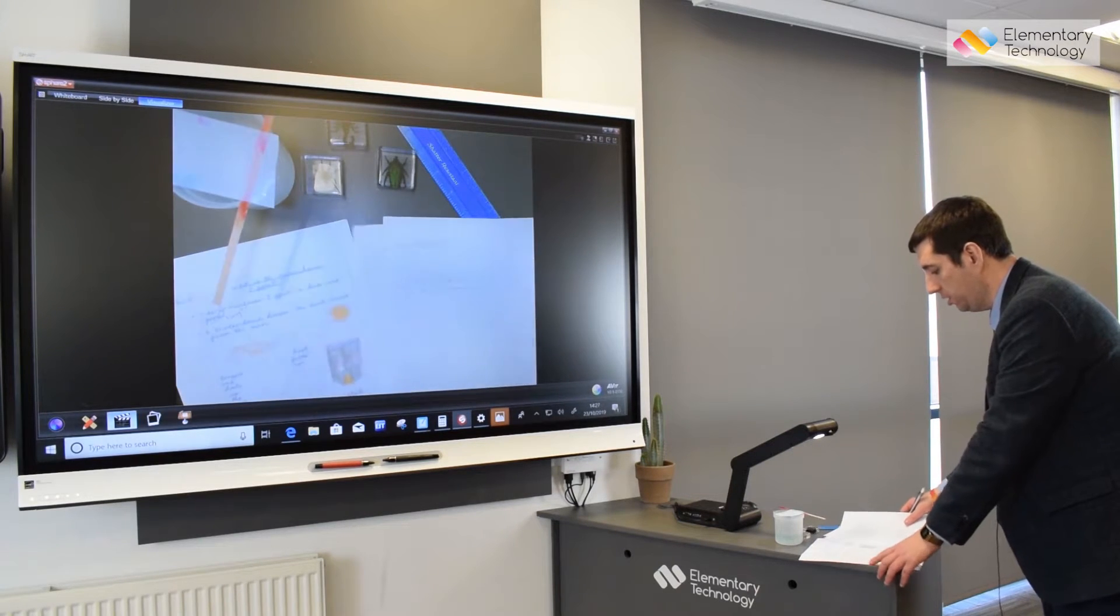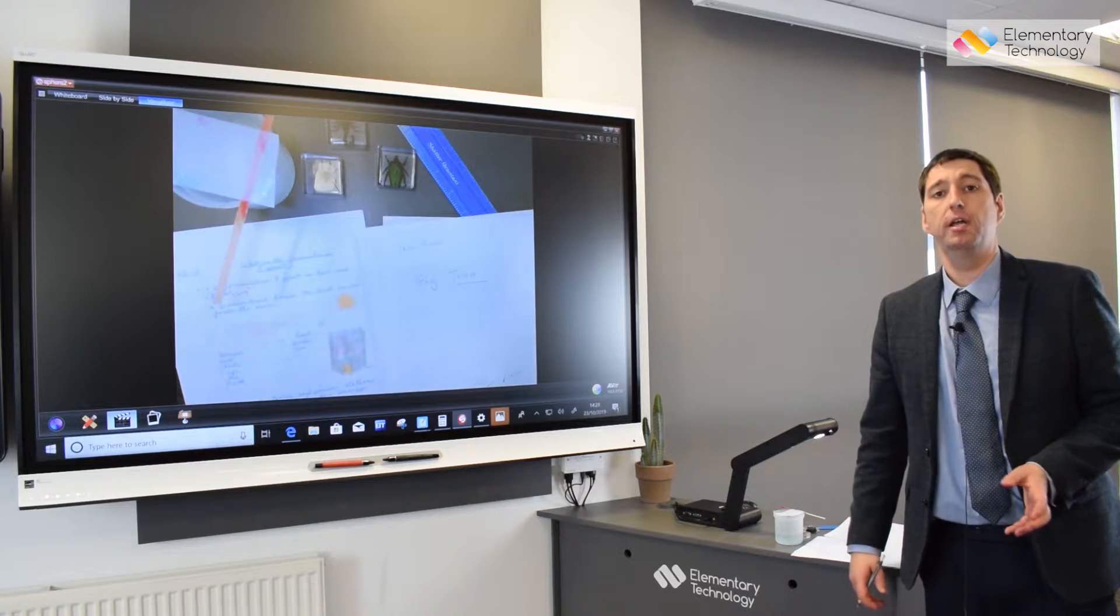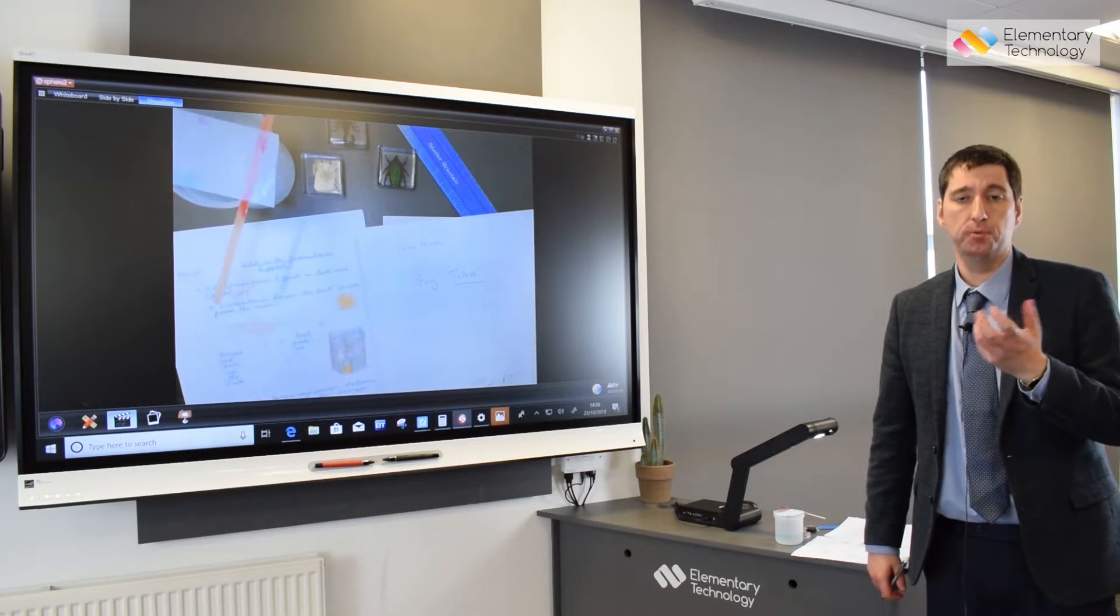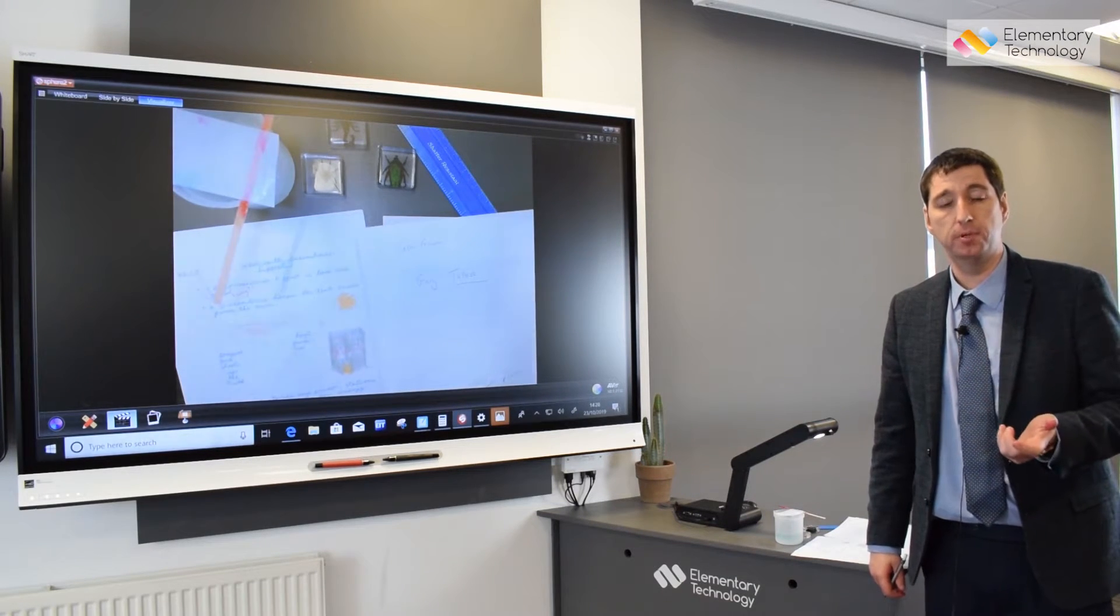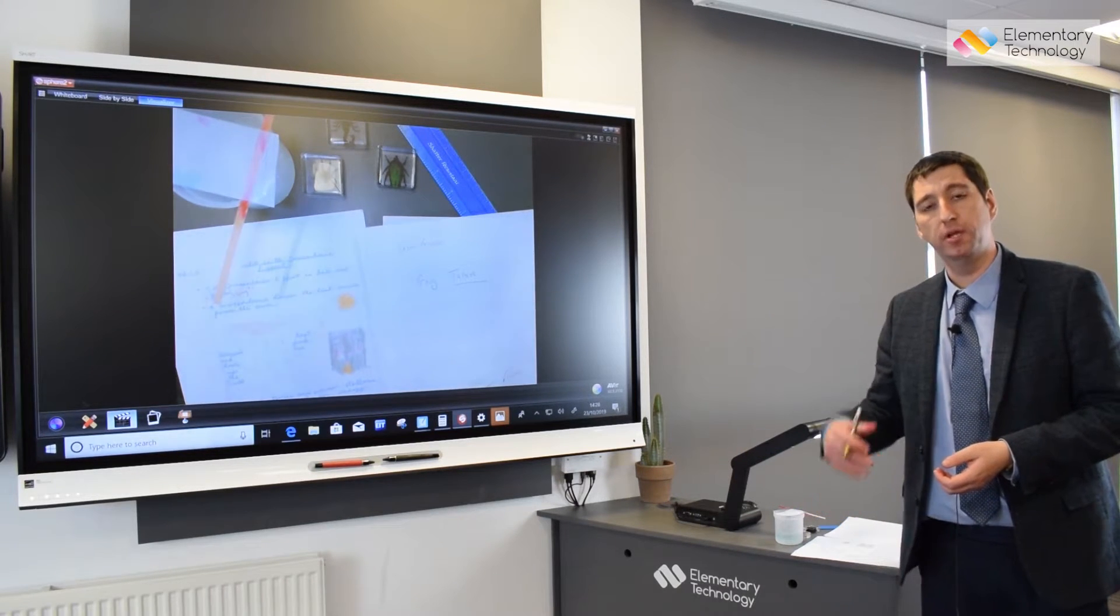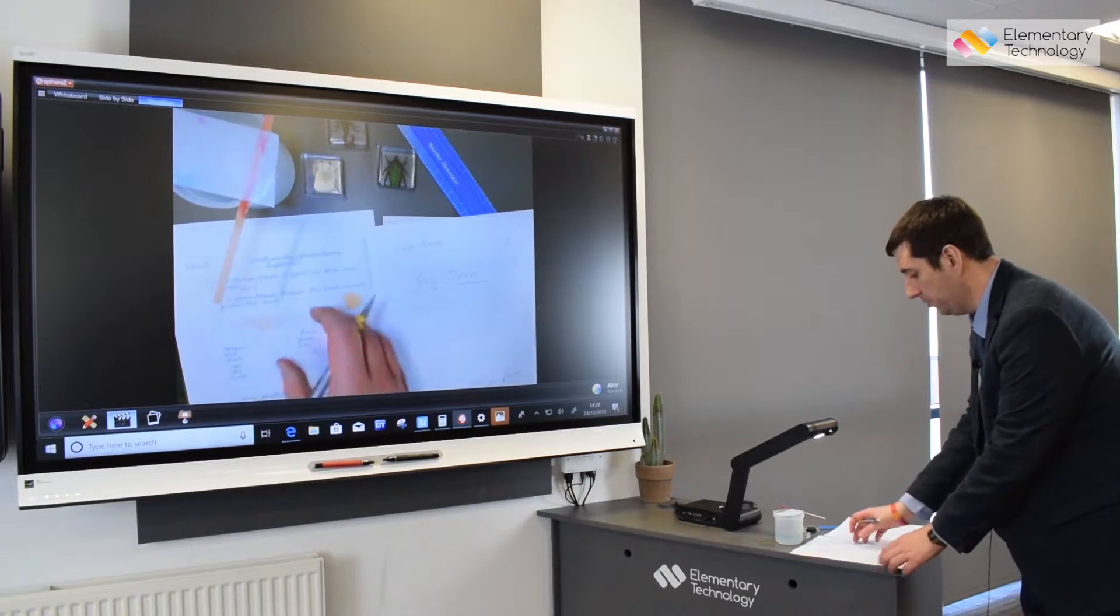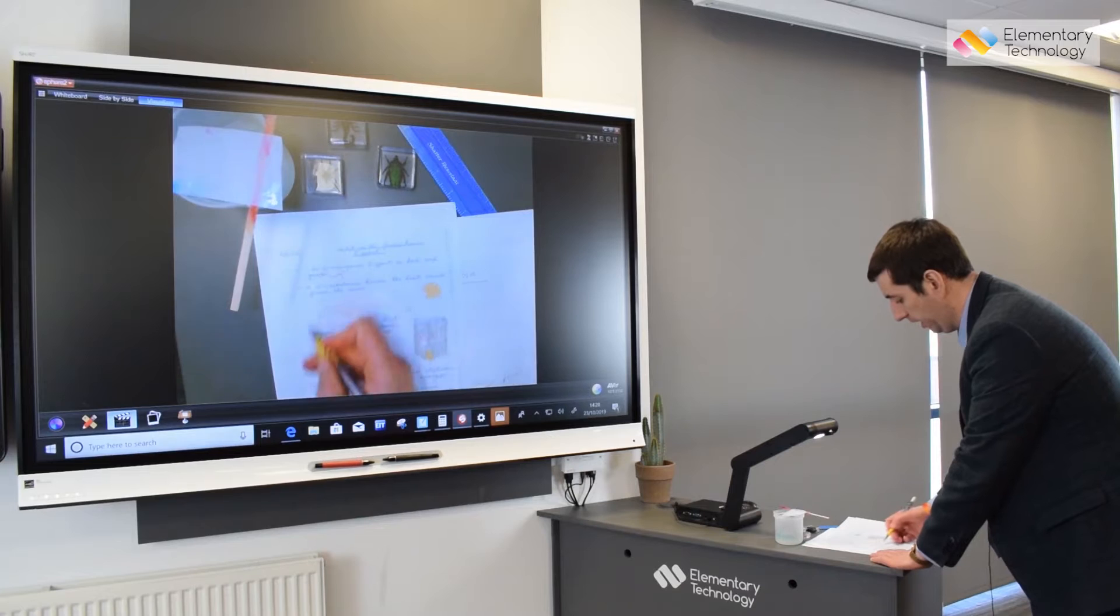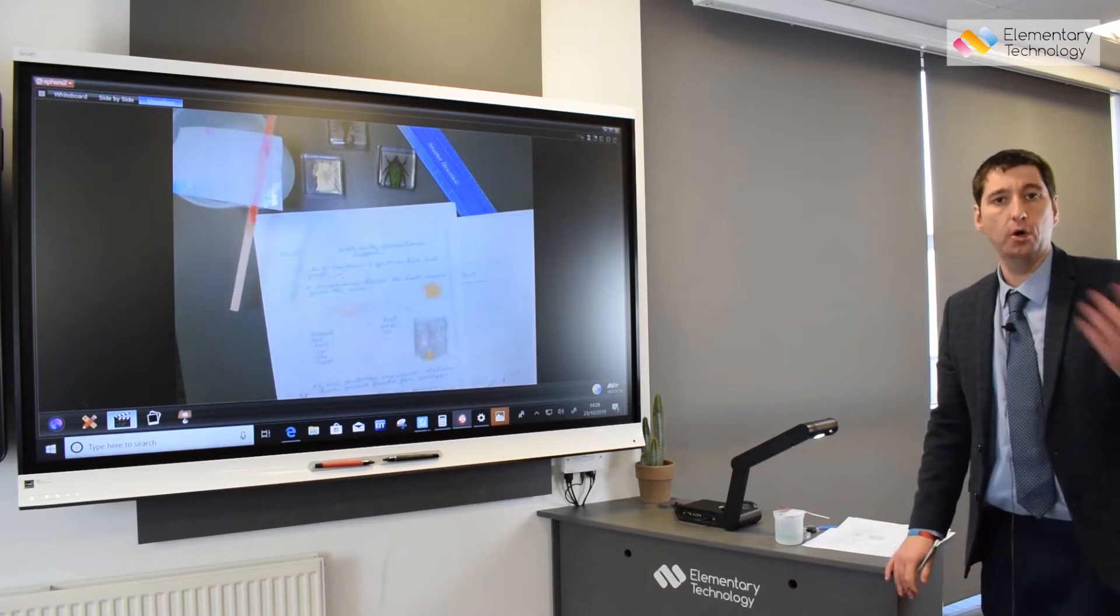The second way you can use a visualiser is to live mark pieces of work. That's a really effective way of providing pupils quality feedback and an engaging way to give feedback. It saves teachers a lot of time because you don't have to re-mark the same mistakes over and over. For example, if I was live marking this piece of work, I could mark on here and then pupils could go and improve their work.